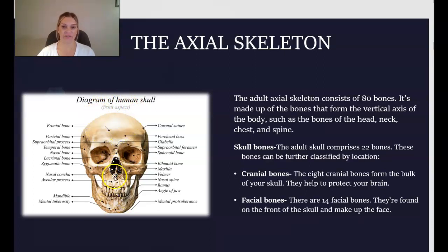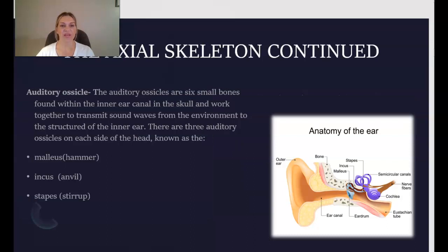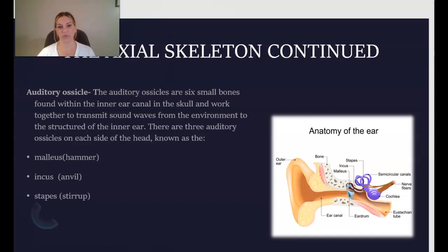All the facial bones are part of the axial skeleton. Continuing with the axial skeleton, we also have the auditory ossicles — six smaller bones found within the inner ear canal in the skull that work together to help transmit sound waves from the environment to the structures of the inner ear.